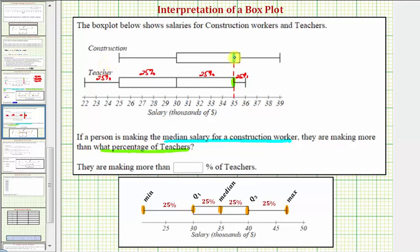So notice how a construction worker making the median salary is going to make more than seventy-five percent of teachers, which is the answer. I hope you found this helpful. Thank you.